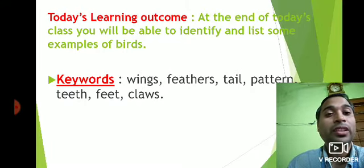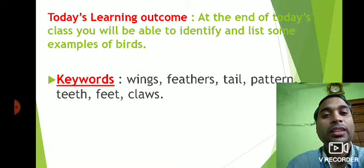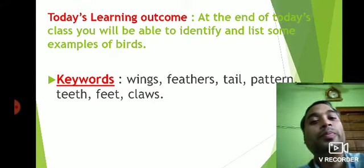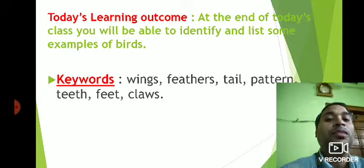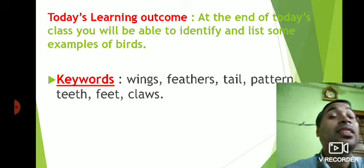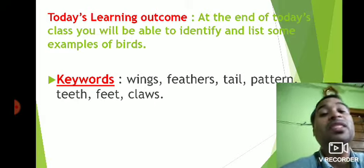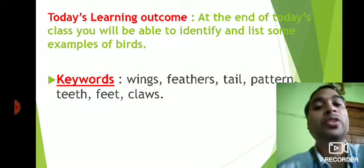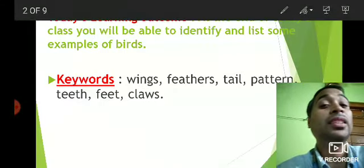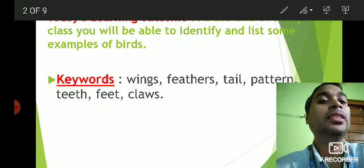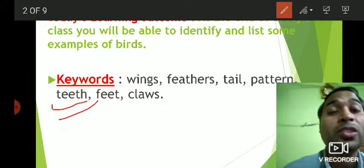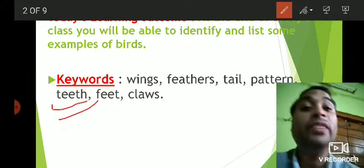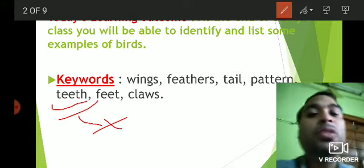These are some keywords we have to associate in this chapter: wings, feathers, tail, pattern, teeth, feet, and claws. The word 'teeth' is included because it is a characteristic that does not exist in birds — teeth are absent in birds. This is important because it helps us know that birds do not have teeth.